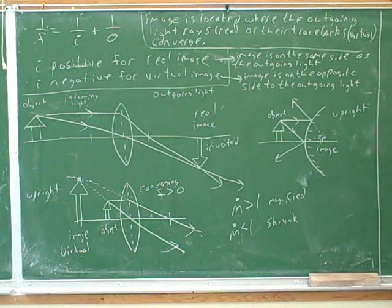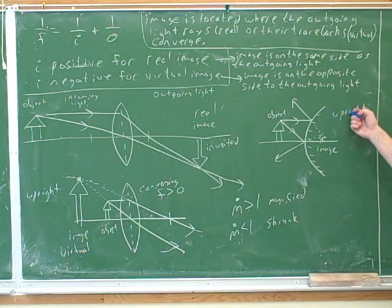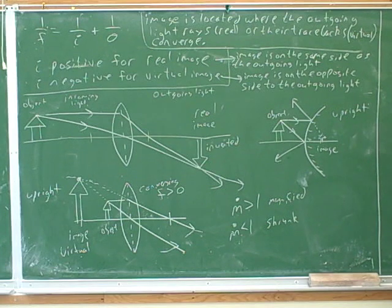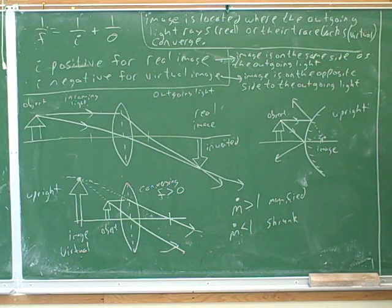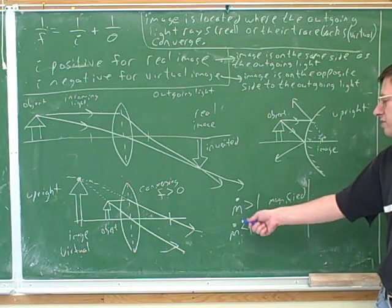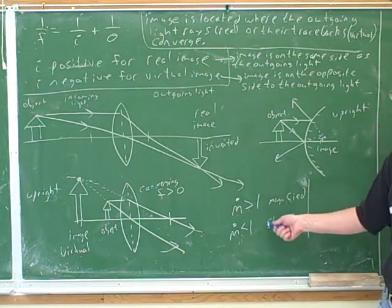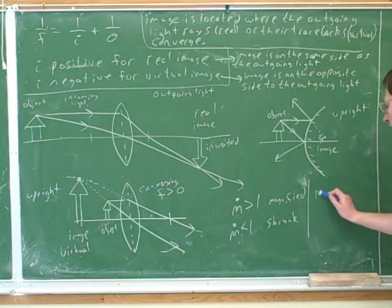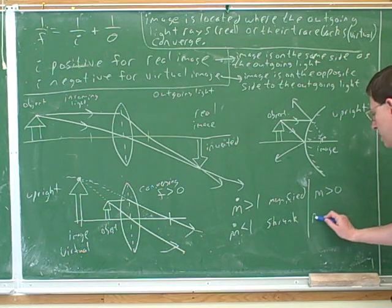There must be some mathematical way to signify whether something is upright or inverted. It turns out that the variable m also does that — m has two jobs. The variable m tells you whether something is magnified or shrunk, and it also tells you whether it's upright or inverted. The magnitude of m tells you whether something is magnified or shrunk, and the sign of m tells you whether it's upright or inverted.